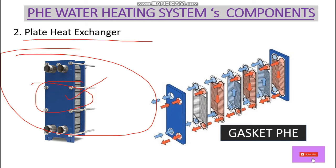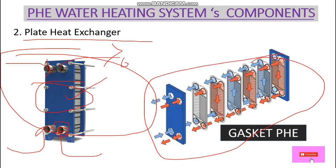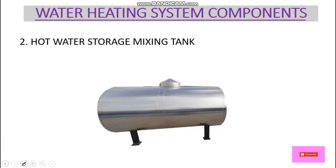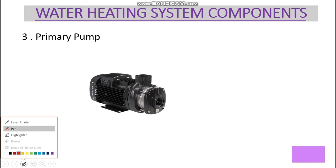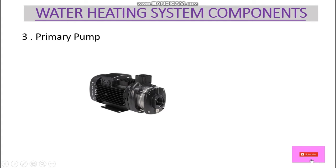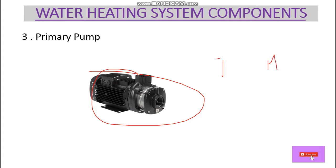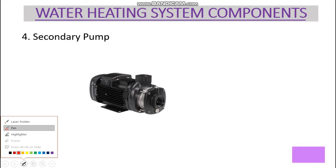We can also call it a heat exchanger. Here this is the inlet point and this is the hot water outlet point, and similarly there is an inlet and outlet on the other side. This is the internal part of the PHE. This is the hot water mixing tank where we can store the hot water, and this is the primary pump, which circulates the water from the heat pump to the PHE.